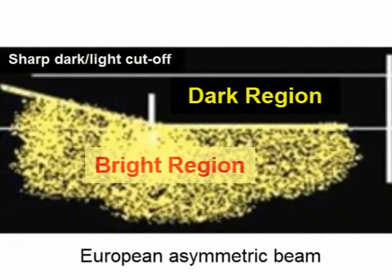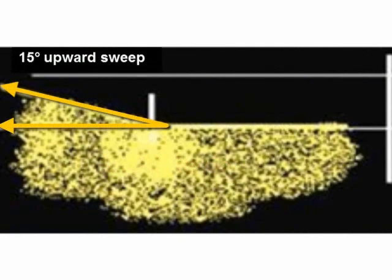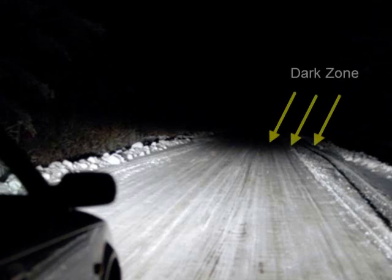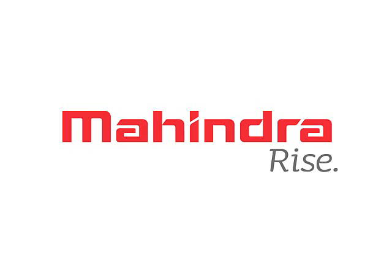The European asymmetric beam, which is used in India and Europe, has a sharp dark light cutoff and a 15 degree upward sweep in the case of right hand drive. Hence the illusion of the dark zone is created on the top right side of the headlamp, which is for safety reasons and as per the European standards.